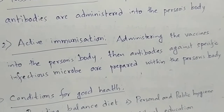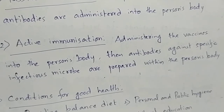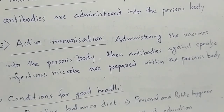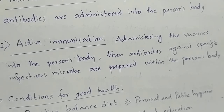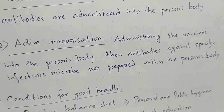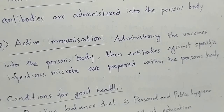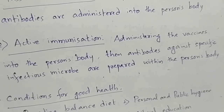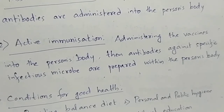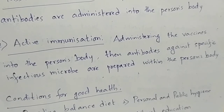Next, active immunization. Here the immune system is made very active, by which it offers protection from diseases to the person. How can it be done? By vaccination — administering vaccines into the person's body. Then the antibodies against specific infectious microbes are prepared within the person's body by their own immune system. So immunity is offered from within, and because the immune system is made active, it is called active immunization.